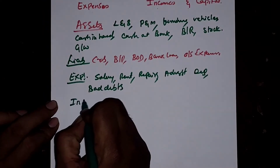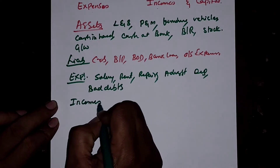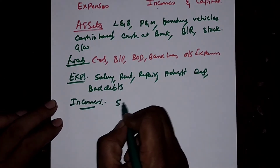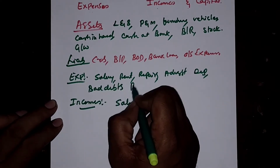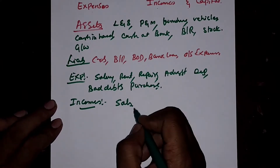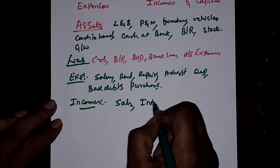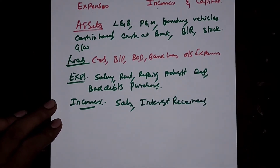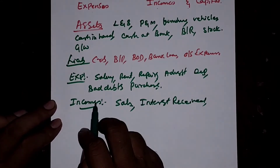Next, Incomes. Under Expenses, we record Purchase; under Incomes, it is Sales. Incomes include Sales, Interest Received, Commission Received, and Dividend Received. These are the Incomes.